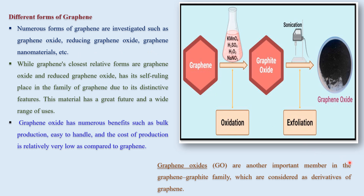Graphene's closest relative forms are graphene oxide and reduced graphene oxide, which hold their own ruling place in the graphene family because of their different features, and this material has a great future and wide ranges of uses. Graphene oxide has numerous benefits such as bulk production, easy to handle, and relatively very low cost of production compared to graphene. Graphene oxide is another important member of the graphite and graphene family, considered as a derivative of graphene.